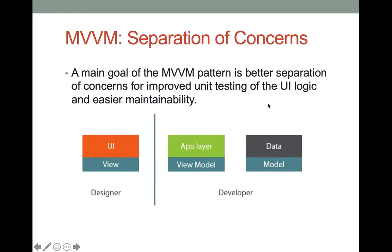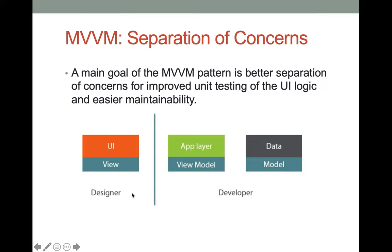Different people on the development team are better at certain tasks. The designer is skilled at building user interfaces and thinking through how the program interacts with the user. Developers are better at thinking about model data and how it interacts with the view. This gives us a separation of concerns between the UI and the model/view model in terms of who does what. We can also test each of these entities separately if they are well separated.